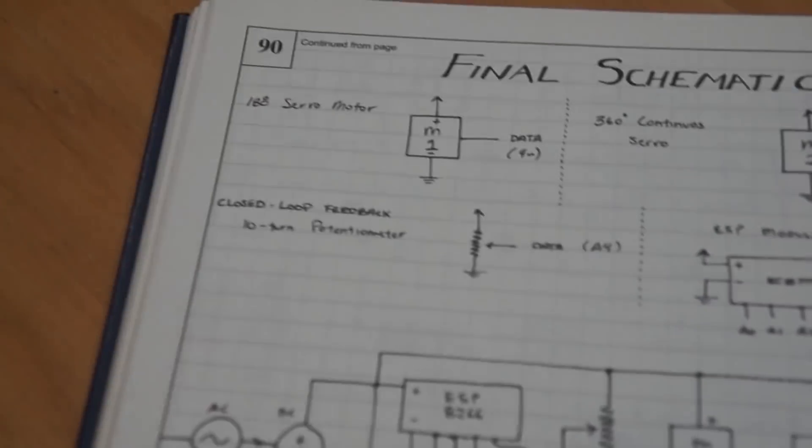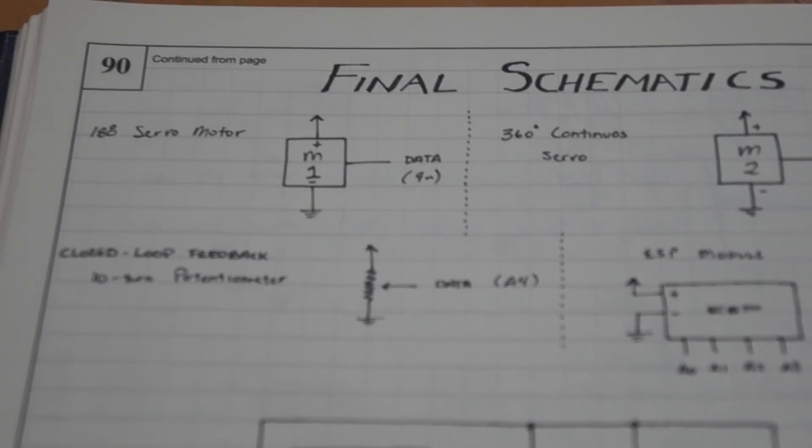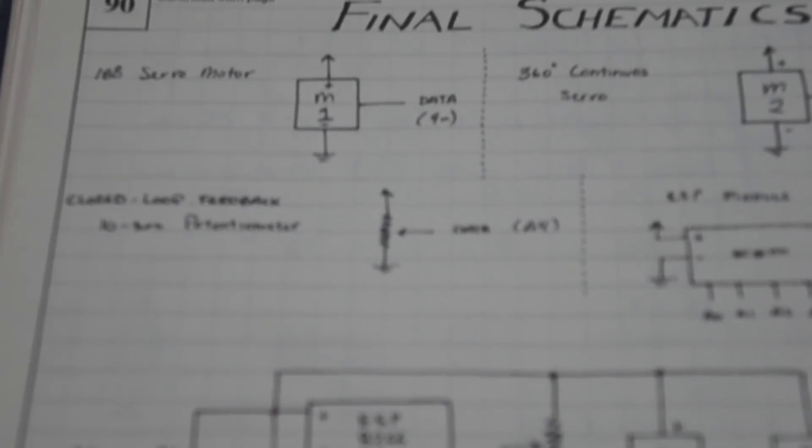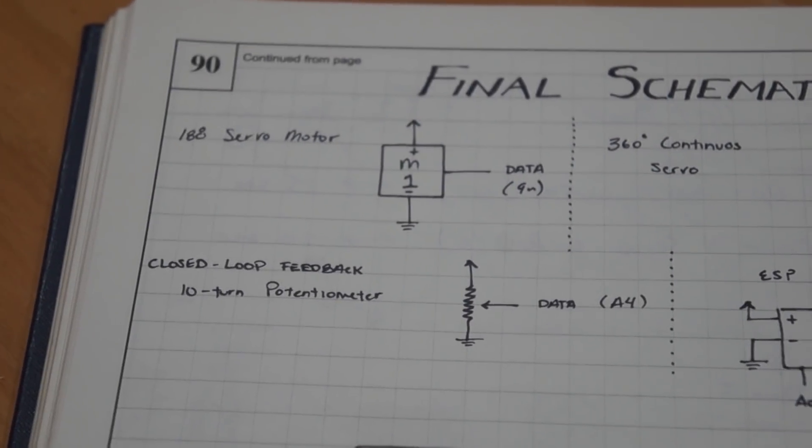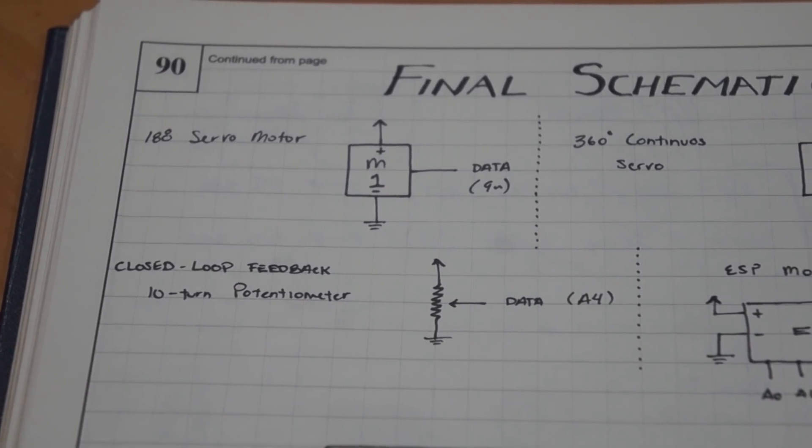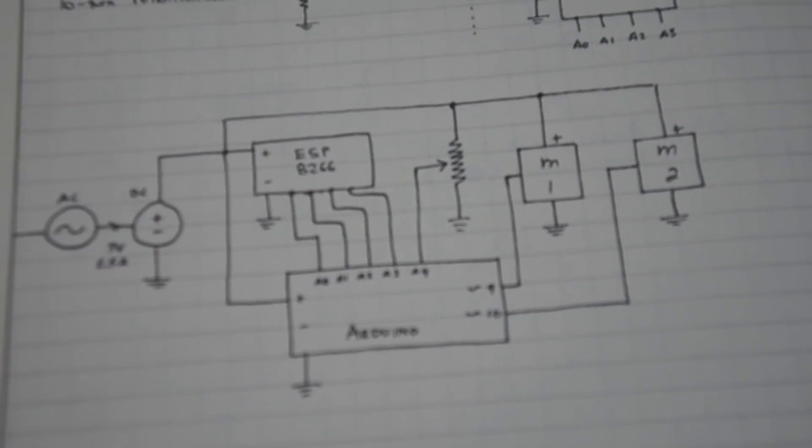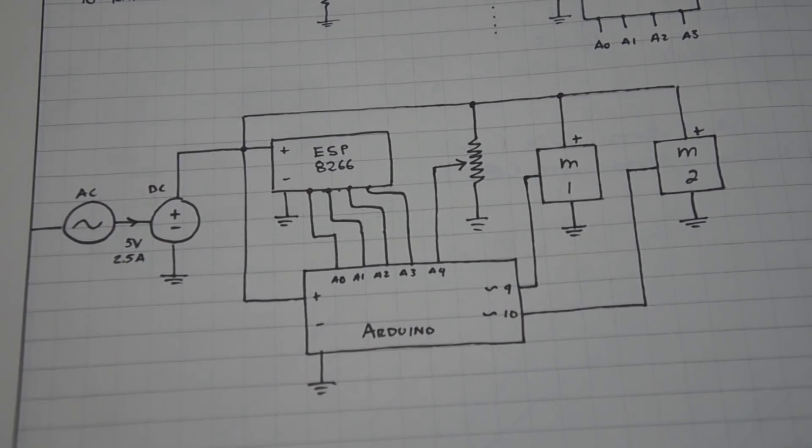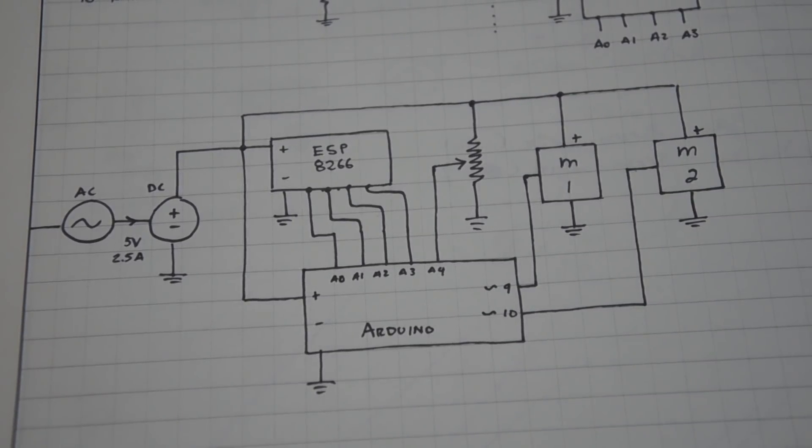Okay, now here are the schematics for the project. M1 will be the 180 degree servo motor and M2 will be the 360 degree servo motor. Then we have the potentiometer being used as a closed-loop feedback to tell what position the blinds are in. And then we have the ESP module that's going to be handling the Wi-Fi commands. So here we have the AC voltage going to a DC voltage.